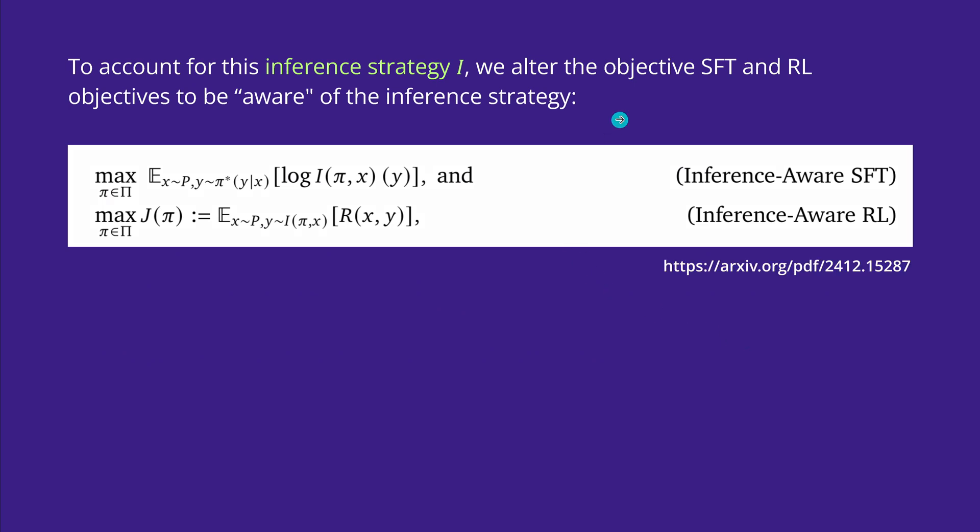This means we have to account for this new inference strategy. After the supervised fine-tuning, we choose an inference strategy I, and if this inference strategy I, we alter the objective function of the supervised fine-tuning and the reinforcement learning objective because we have to have a coherent inference strategy that is already embedded in the supervised fine-tuning and the reinforcement learning.